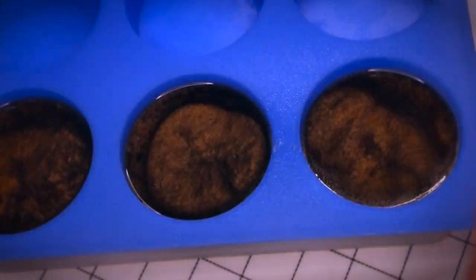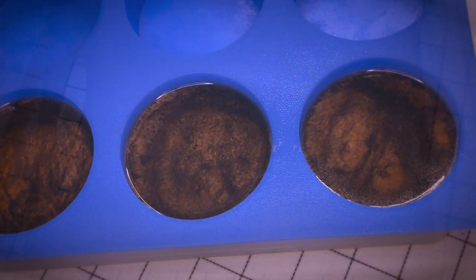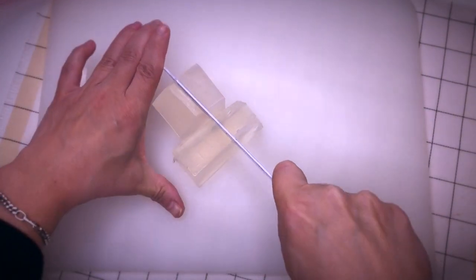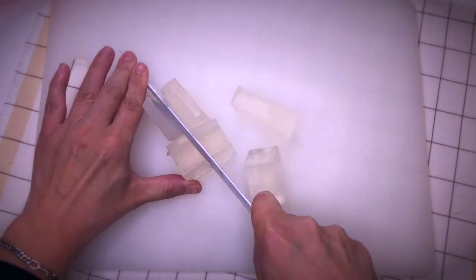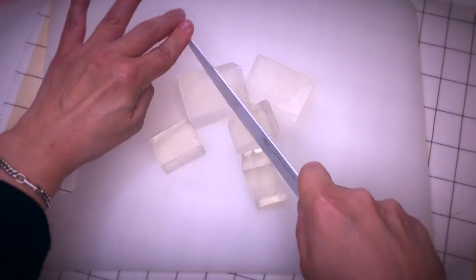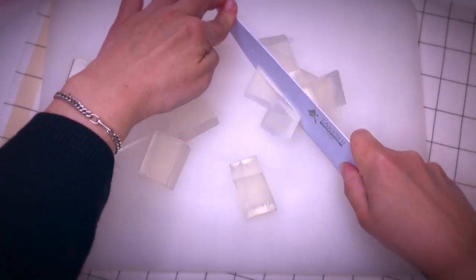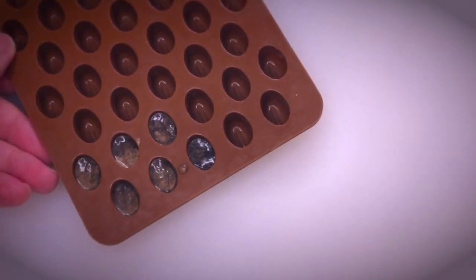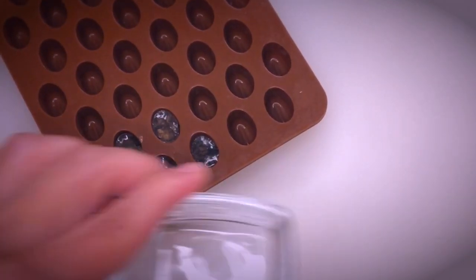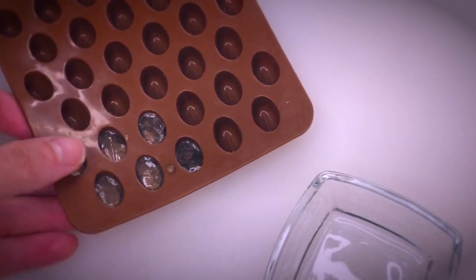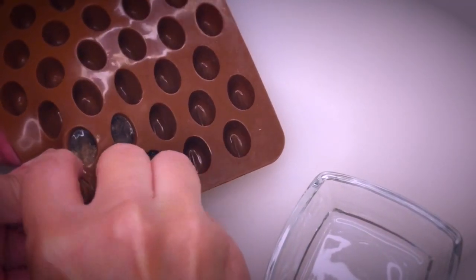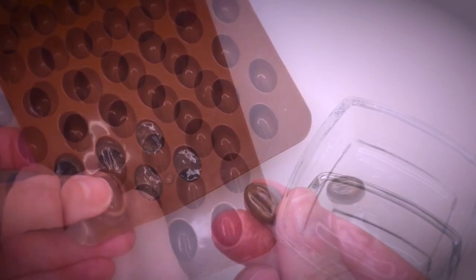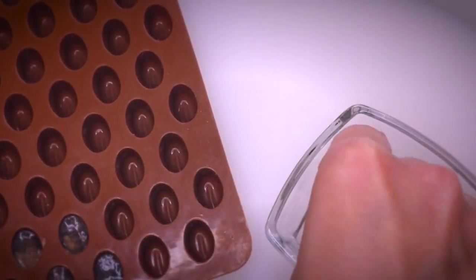In the meantime we can cut down some melt and pour soap that we will use to create the foam on top of the coffee or cappuccino. Also let's check how the coffee beans turned out. I think they turned out pretty cool.